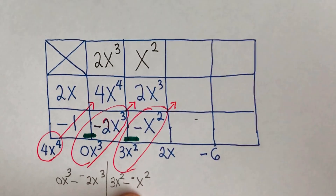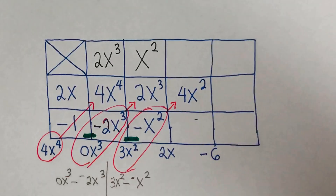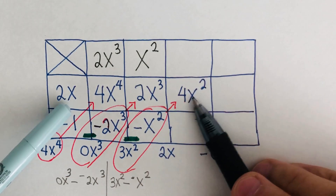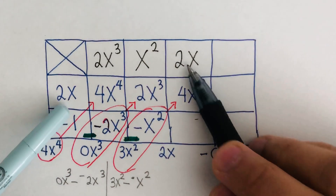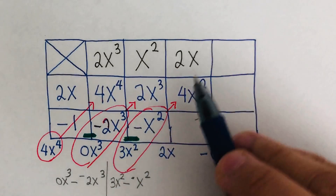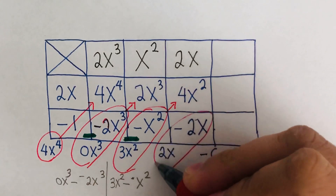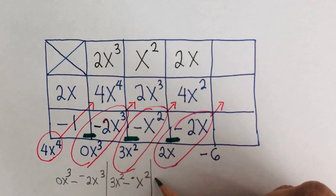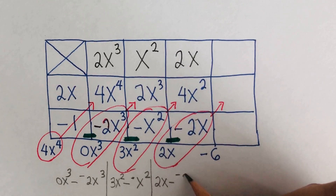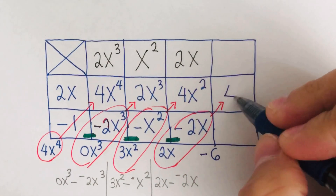Now I need to find what to write so that multiplying by 2x gives 4x squared — that's 2x. Then 2x times 2x is 4x squared, and 2x times negative 1 is negative 2x. Subtracting: 2x minus negative 2x gives positive 4x, which goes in the next box.